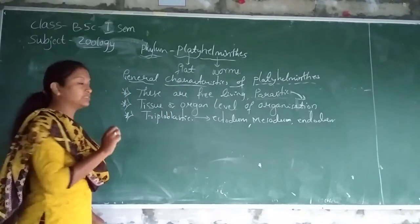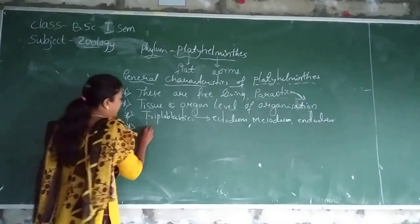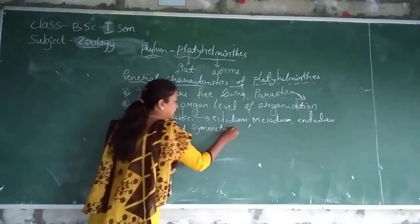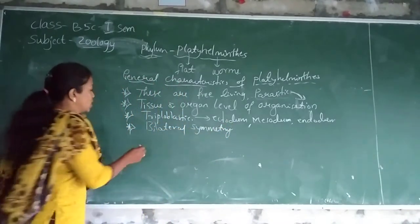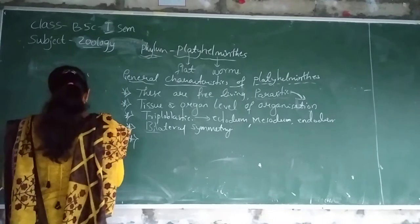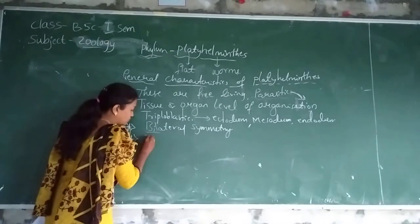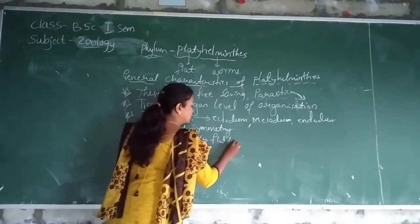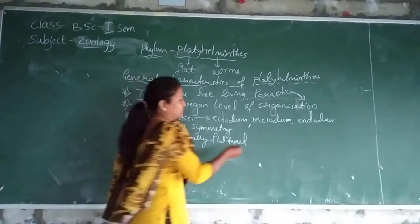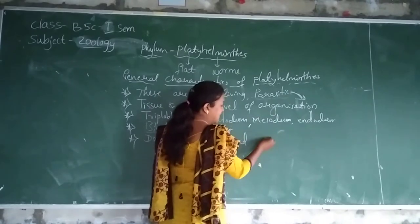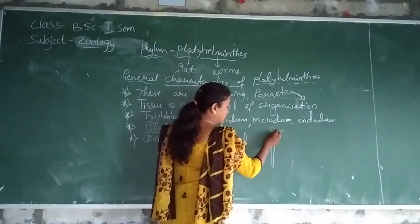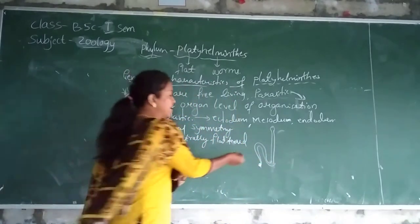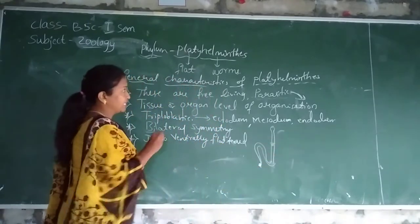The platy elemntis are triploblastic animals. The next characteristic is they possess bilateral symmetry — bilateral means the body is divided into two equal portions. The next one, they possess dorsoventral flattening. Dorsoventral flattening means the body is flat. These are flat-like structures, that is why these are called flat worms. The body is dorso-ventrally flattened.